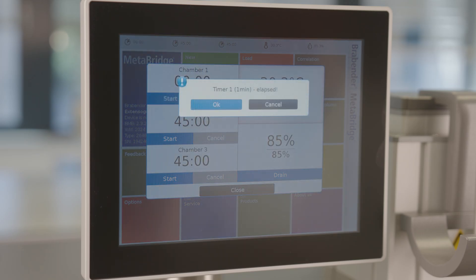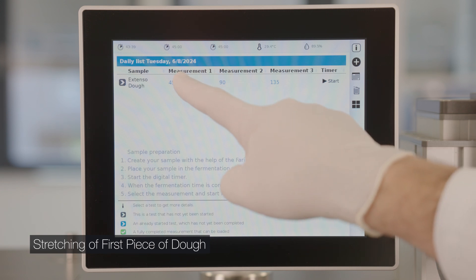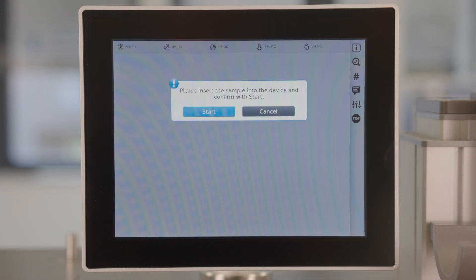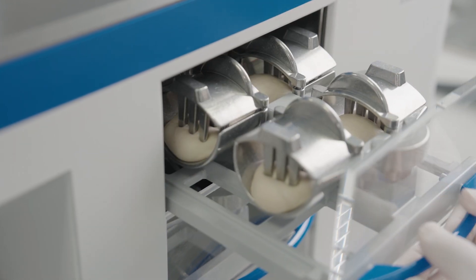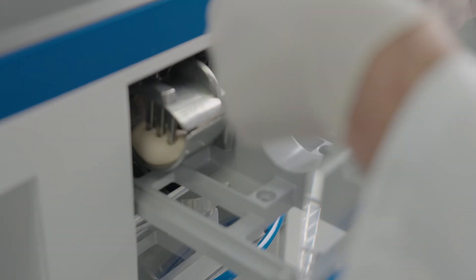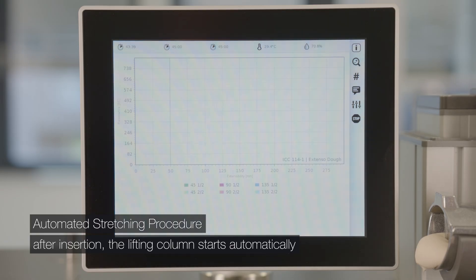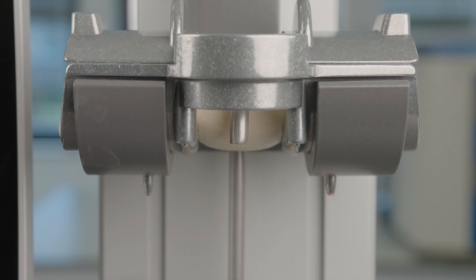When proving time expires, select measurement and tap start. Insert sample into stretching device and tap start again. The dough is stretched until rupture.